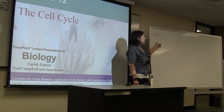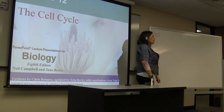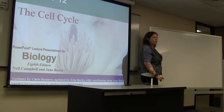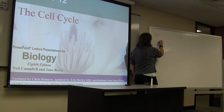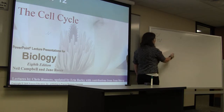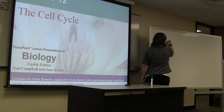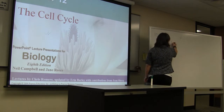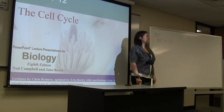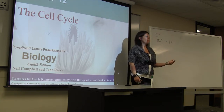Of that 10%, mitosis — which is the actual process of cell division — is only occurring in 10% of 10% of cells. So that means at any given time, of all of your cells, only 1% of them are going to be undergoing the cell cycle.